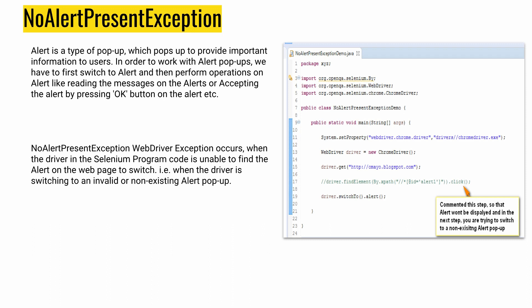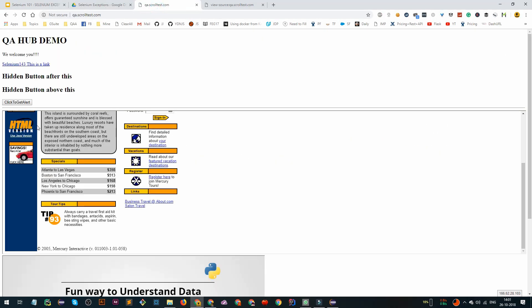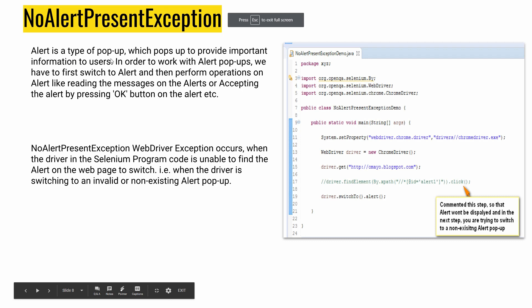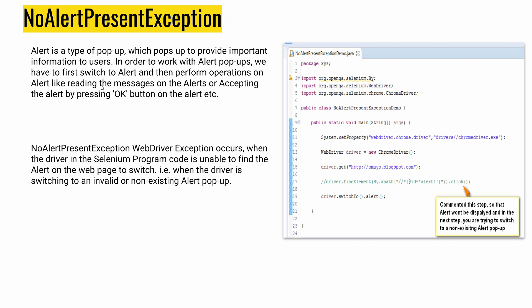We also have NoAlertPresentException. An alert is basically a pop-up — if you go to this website and click it, you see a 'Hello' alert. This exception generally occurs when the driver in Selenium code is unable to find the alert on the page to switch to. For example, suppose you commented out the part where you click the button that triggers the alert and you go directly to driver.switchTo().alert() — you will get a NoAlertPresentException.